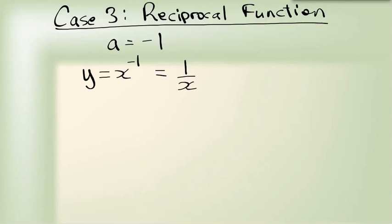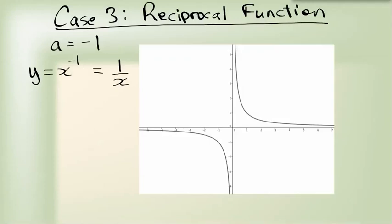Its graph looks like this. Notice how when you are looking at this graph, the reciprocal function has the x and y-axis as asymptotes. It approaches the x-axis but never quite gets there. It also approaches the y-axis but never quite gets there.